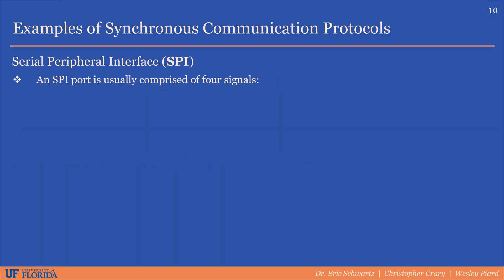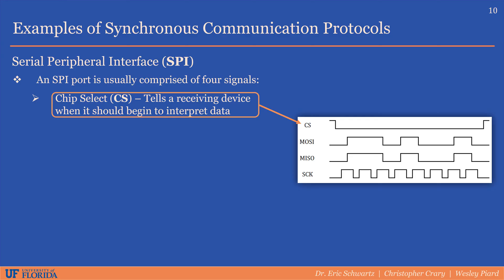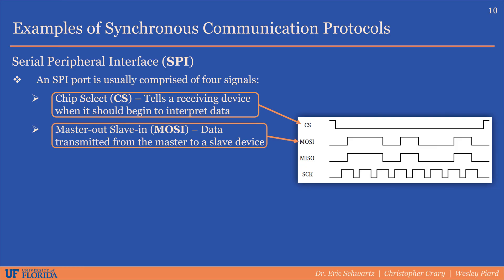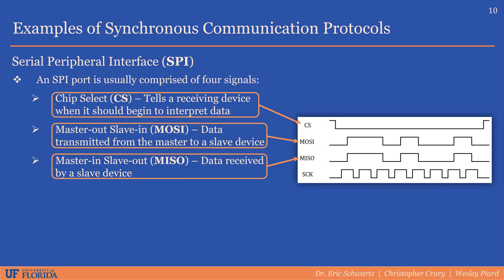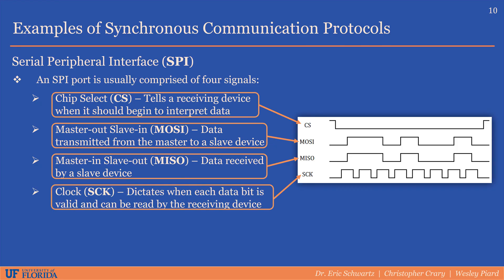The first example of a synchronous communication protocol we will discuss is the Serial Peripheral Interface, also known as SPI. An SPI port is usually comprised of at most four signals. The first is the chip select, which tells a receiving device when it should start storing the transmitted data. As you can see in the diagram, the chip select is active low while data is being transmitted. The next two signals are data input and output: Master Out Slave In, commonly called MOSI, and Master In Slave Out, commonly called MISO. MOSI is the data being transmitted from a master device to a slave device, and MISO is the data being received by the master from a slave device. The last signal is the clock, which dictates when each data bit is valid and can be stored by the receiving device.